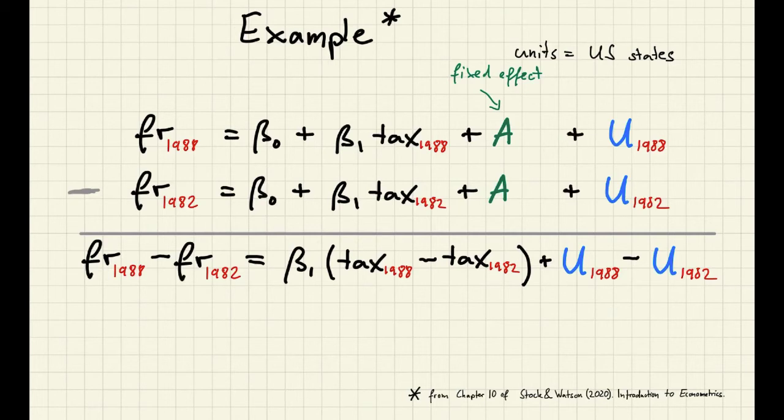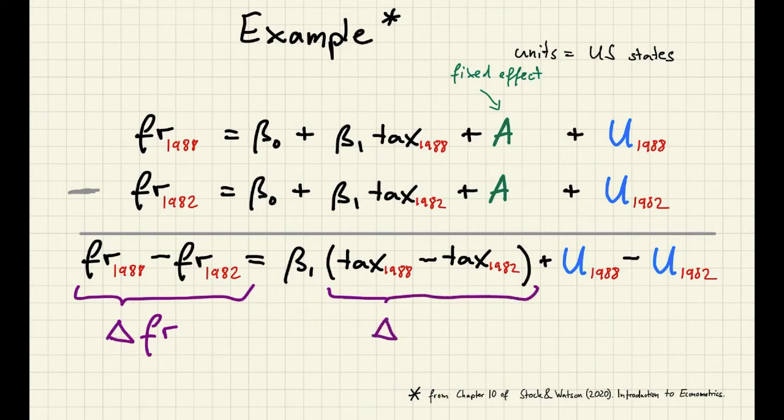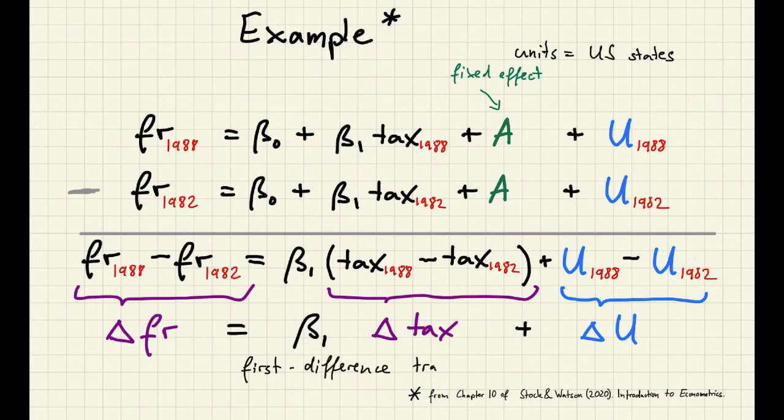So it's just another variable that we observe in our cross-section. Let's call it delta, we use delta because it's commonly used for differences. And similarly, here let's call this delta-tax. And the difference of the error terms will be delta U. Now using this new notation, we can just put together our transformed model like this. The transformation that we have applied here is called the first difference transformation.